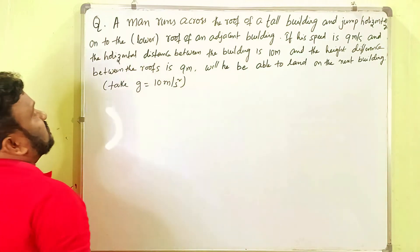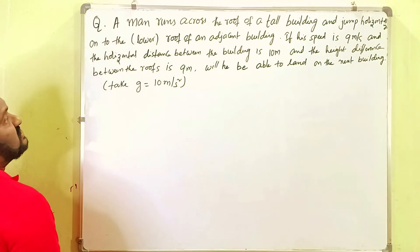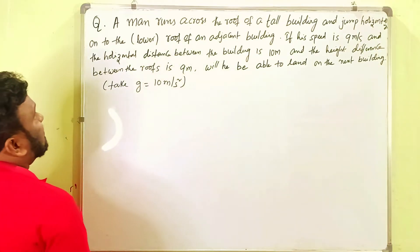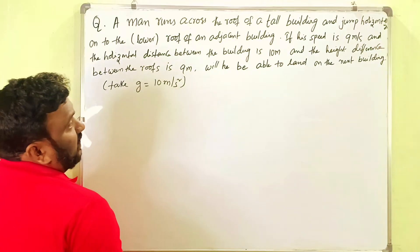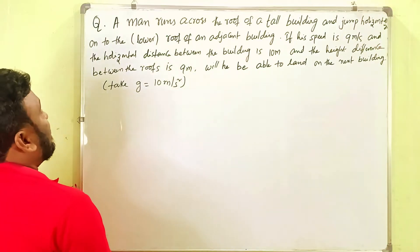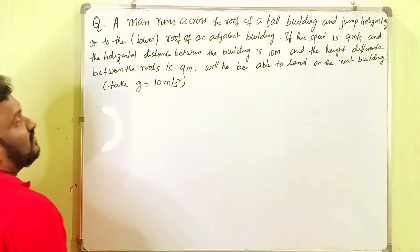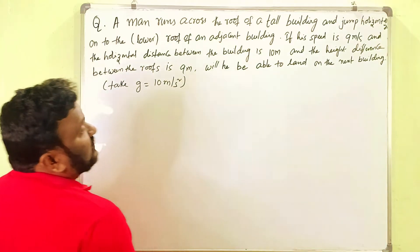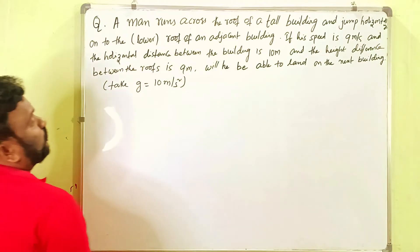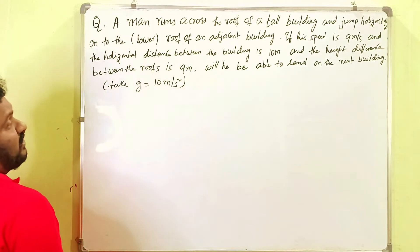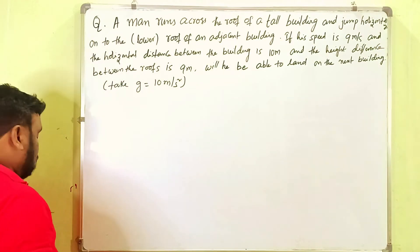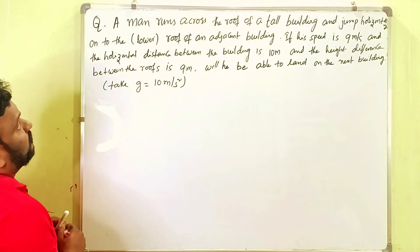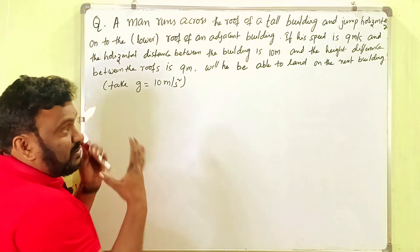The question is: A man runs across the roof of a tall building and jumps horizontally onto the lower roof of an adjacent building. If his speed is 9 meters per second and the horizontal distance between the buildings is 10 meters and the height difference between the roofs is 9 meters, will he be able to land on the next building? Take g equals 10 meters per second squared.